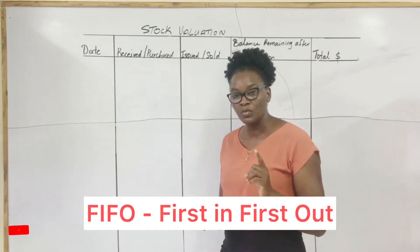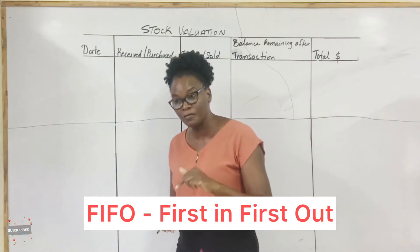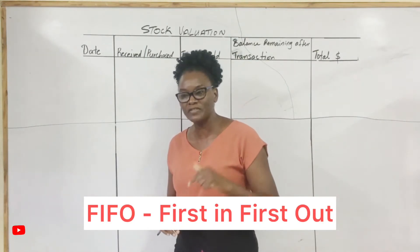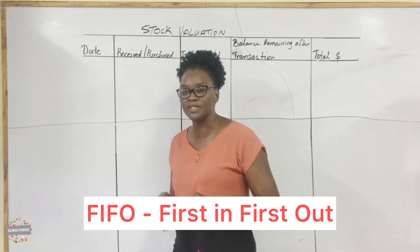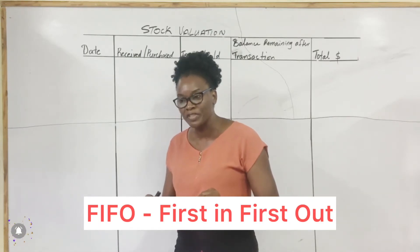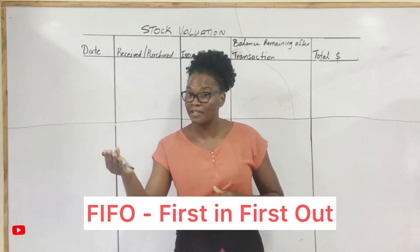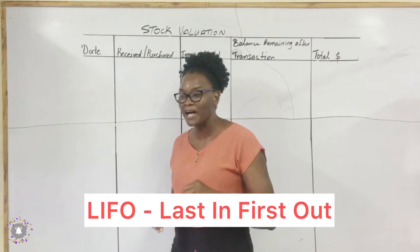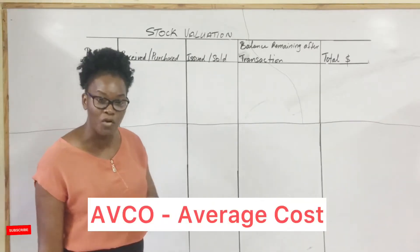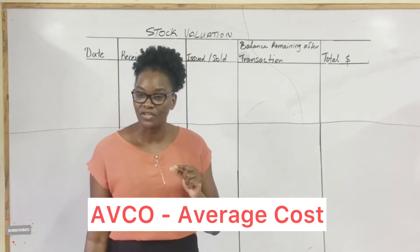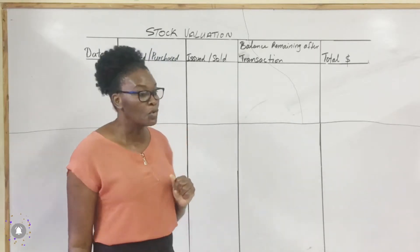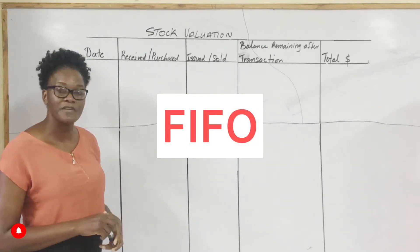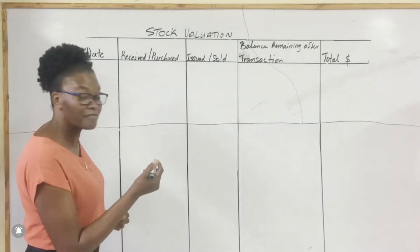There are three methods of valuing your stock. We have FIFO, which is First In First Out — that is, the first set of stock to come into the business is the first set that you will issue or sell. Then we have LIFO, Last In First Out, and then AVCO, which is Average Cost. We're looking first at the FIFO method of stock valuation.